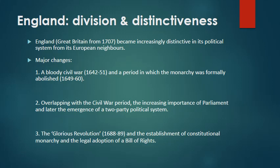First, with a bloody civil war from 1642 to 51, and a period in which the monarchy itself was formally abolished from 1649 to 60. Second, and overlapping with the civil war period, the increasing importance of parliament, and later the emergence of a two-party political division. Third, the Glorious Revolution of 1688-1689, and the establishment of a constitutional monarchy, and the legal adoption of a Bill of Rights.